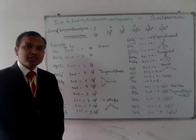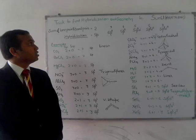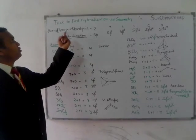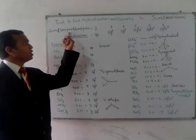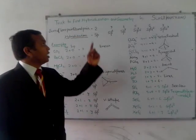Hello friends, here I will tell you how to find the hybridization quickly. You have to add the lone pair electron and bond pair electrons which is present in a molecule.